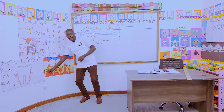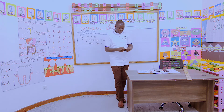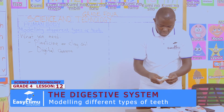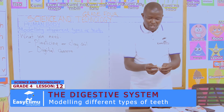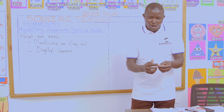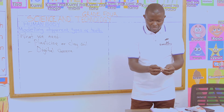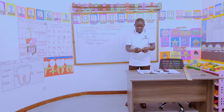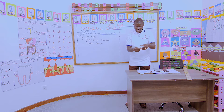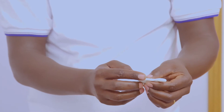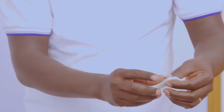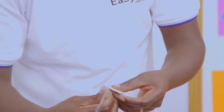Incisors should also have one root, as you can see here. As we model, we have the clay — in my case I've come with plasticine. They are almost flat at the top. I can see you are doing good work. You can also use your ruler to make sure it is almost flat at the top, but also with one root.